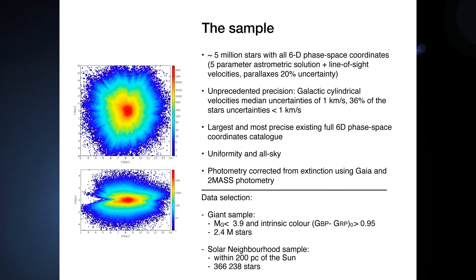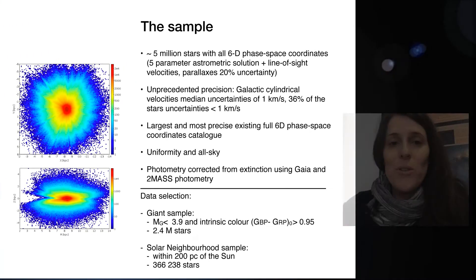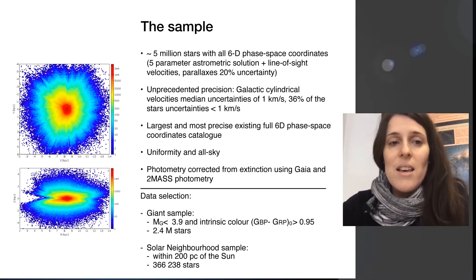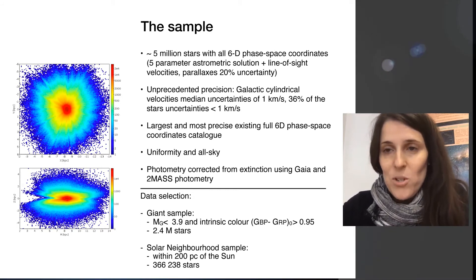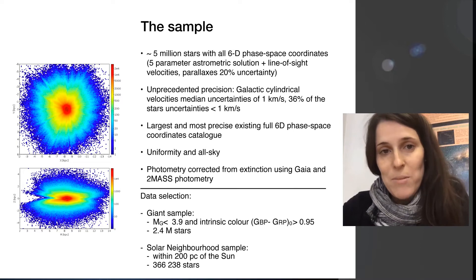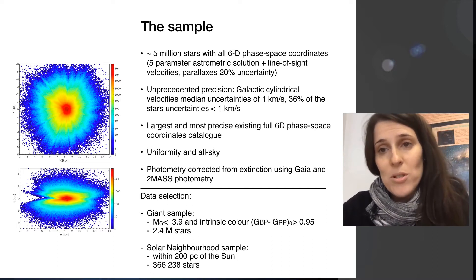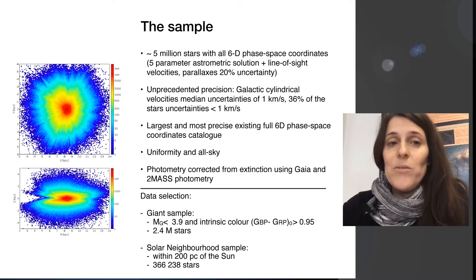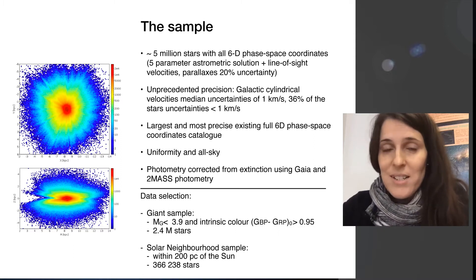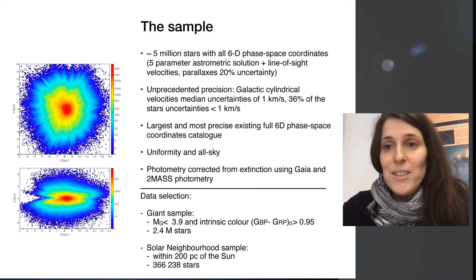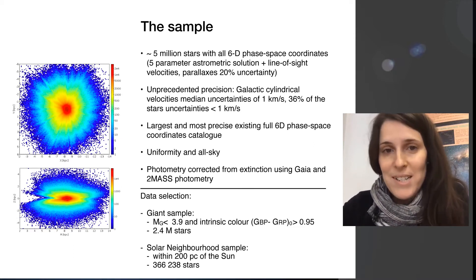The sample we use in this study is mostly composed of stars in Gaia DR2 that have the 6D phase space coordinates. This means that for these sources, Gaia gave us the five-parameter astrometric solution and also line-of-sight velocities. We further selected our sample to have very good uncertainties in parallaxes of at most 20%, making a total of around 5 million stars, which is more than one order of magnitude larger than previous surveys and similar samples.